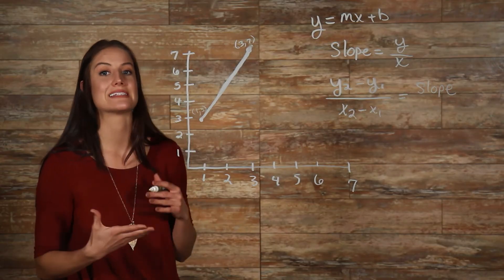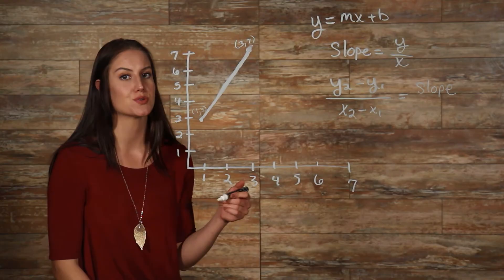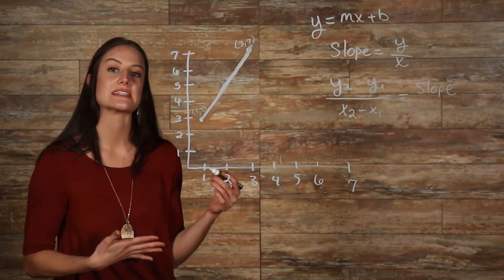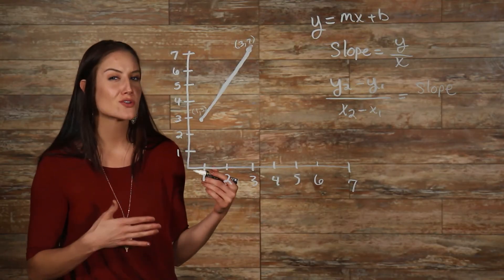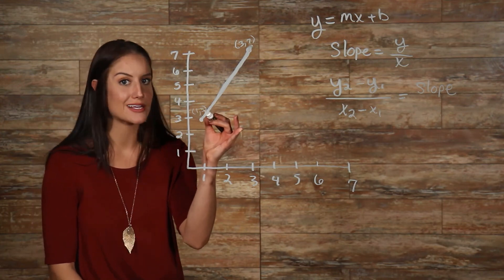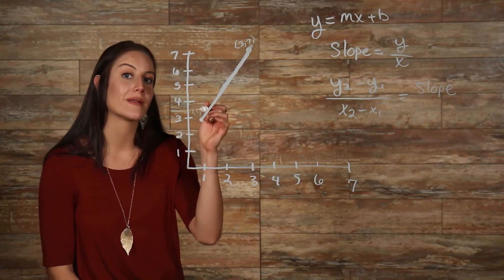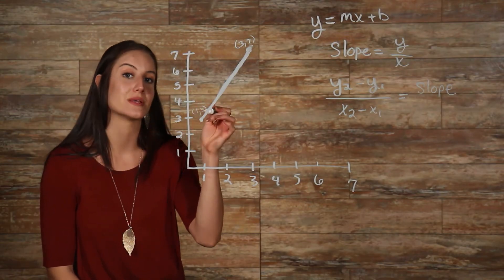However, what you can't do is assign x1 to the x-value in a set of coordinates, and y2 to the corresponding y-value. For example, in our points here on the graph, I couldn't say that my 1 here is my x1, and that my 3 here is my y2. If I make 1 here x1, then my corresponding y-value here has to be y1.